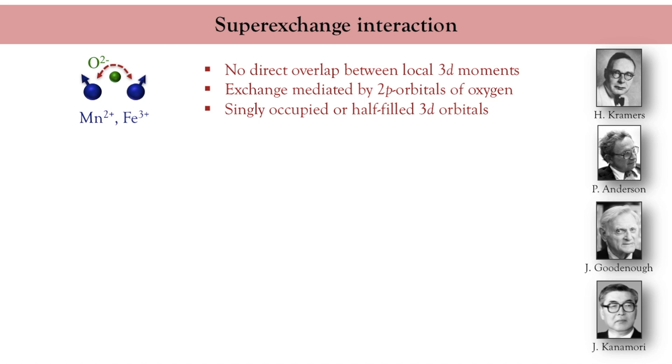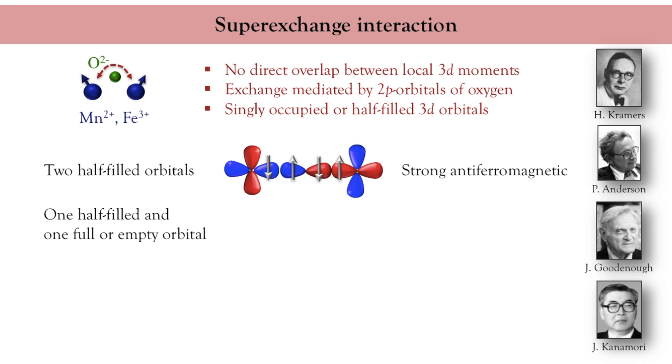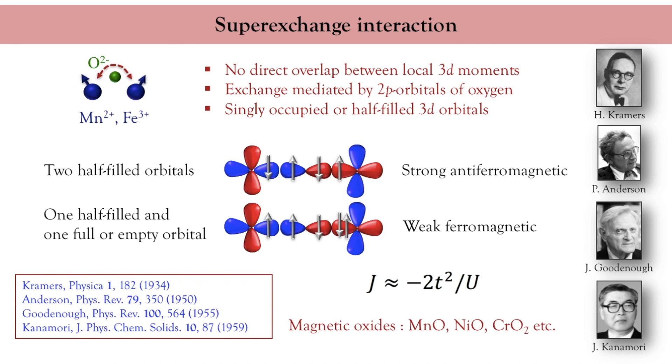This effect results in different types of exchange interaction depending on the filling of the 3d shell. For instance, if the d shells of the two magnetic ions are half filled, then the magnetic moments couple strongly through the p orbitals of oxygen. Since the valence electrons occupying the oxygen orbital must be antiparallel with each other, the coupling between the two magnetic ions is anti-ferromagnetic and strong. If one shell is half filled while the other one is either fully occupied or empty, then the coupling is weak and ferromagnetic. Notice that the nature of the exchange interaction depends on the overlap between p and d orbitals and as such, it strongly depends on the angle formed by the two magnetic ions on the oxygen.